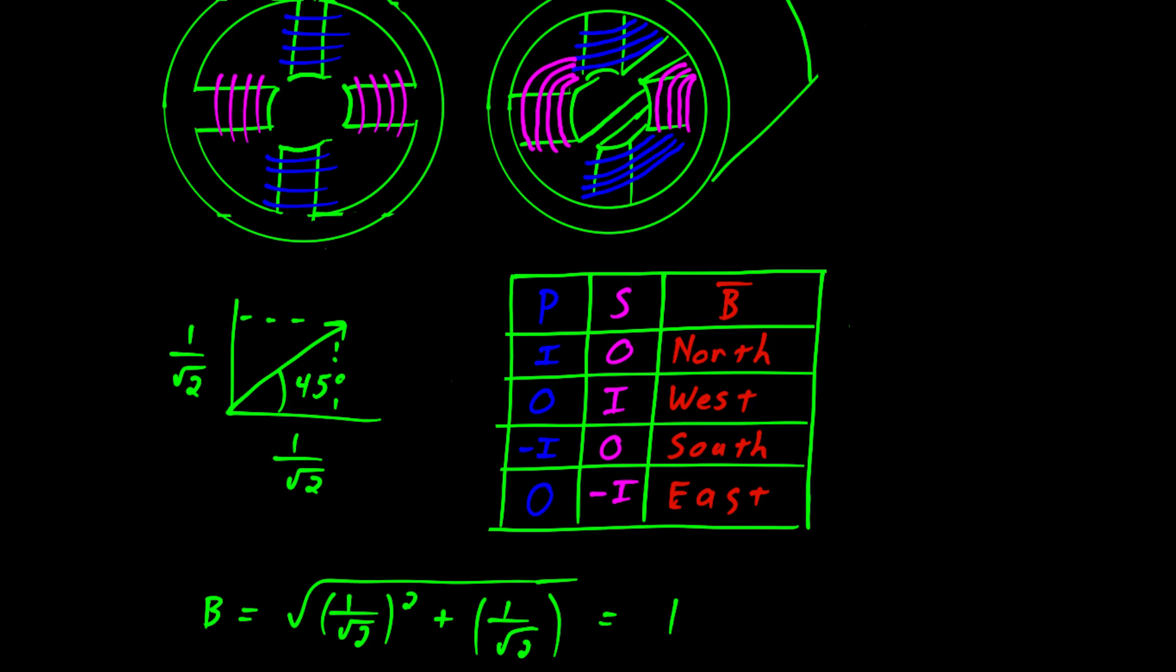Before we end this video, let's clean up a few facts. This last sketch is a representation of the stator of a two-phase alternating current motor. And if we can have two phases, why not three?